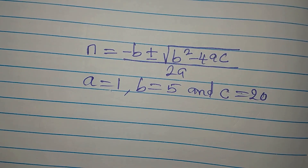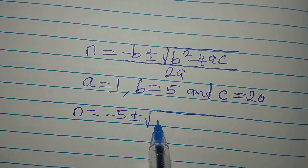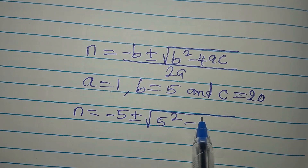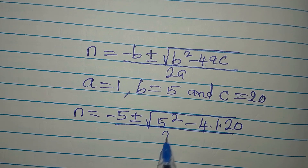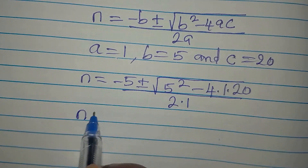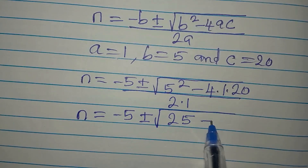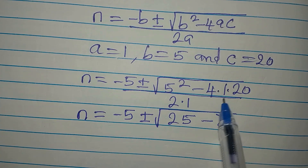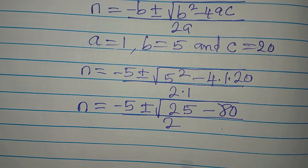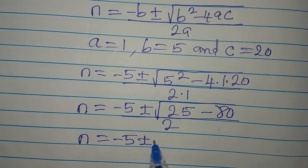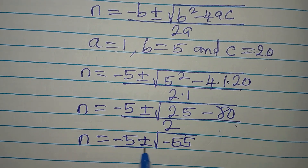Substituting: n = (minus 5 ± √(5² minus 4×1×20)) / (2×1) = (minus 5 ± √(25 minus 80)) / 2 = (minus 5 ± √(negative 55)) / 2.